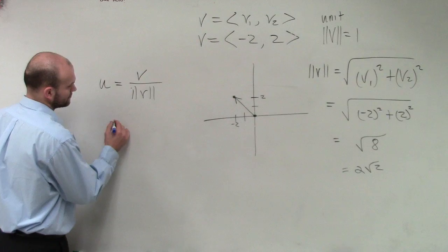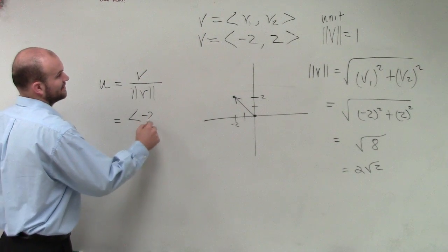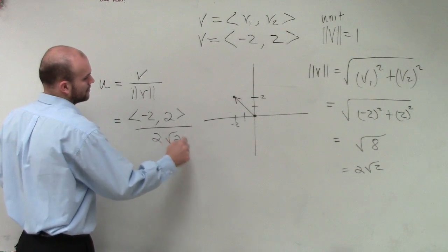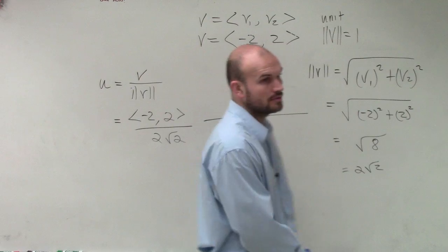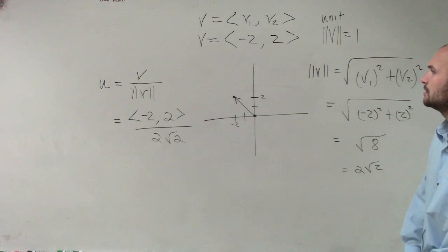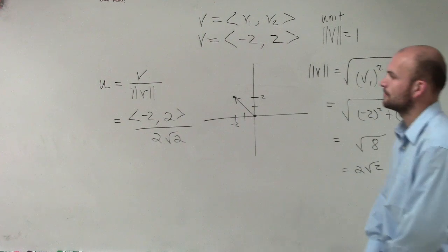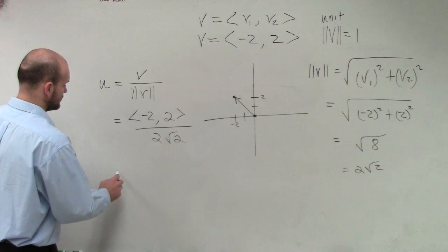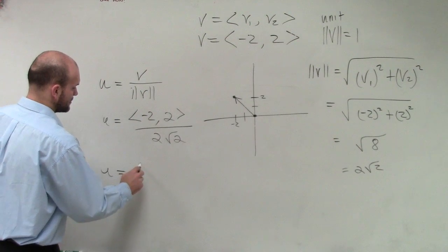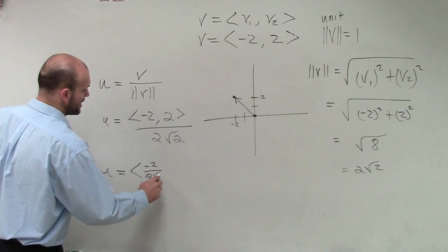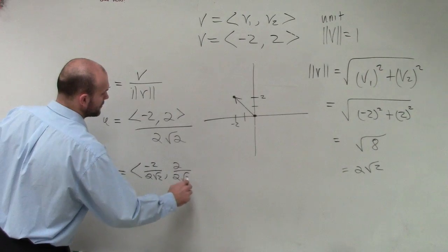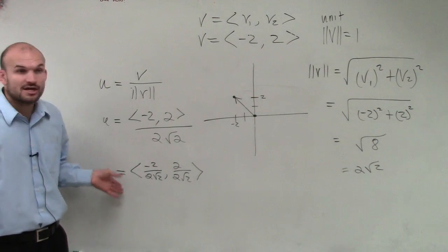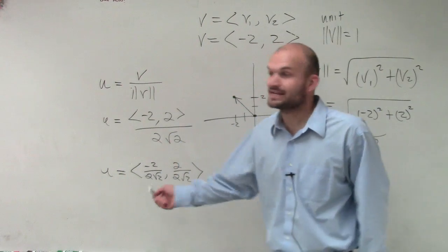Then we take our vector. So our vector is negative 2 comma 2 divided by 2 radical 2. Then what we can do, ladies and gentlemen, if I want to write this in vector form, u equals negative 2 over 2 radical 2 comma 2 over 2 radical 2. Now we can obviously simplify this in a second. So that is our unit vector. But is our unit vector right now simplified? No. But that is going to be our unit vector.